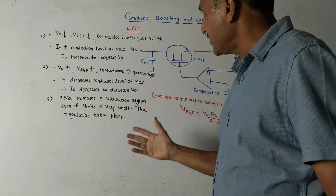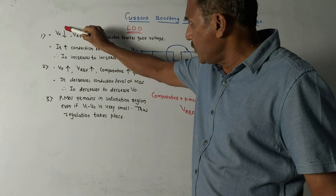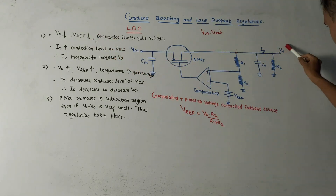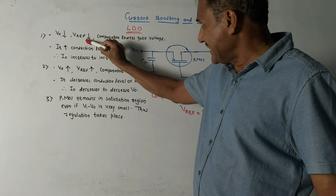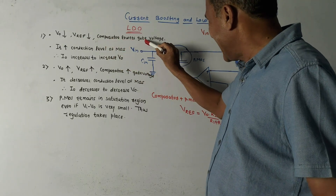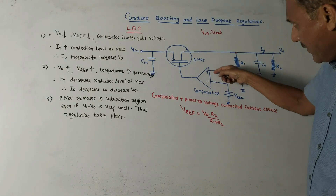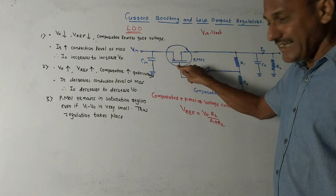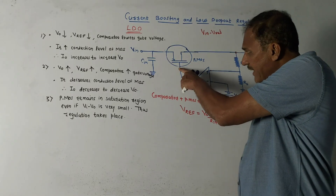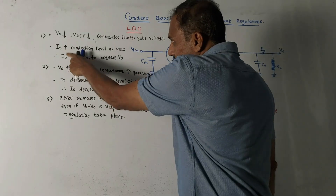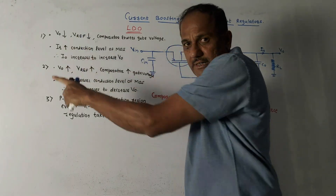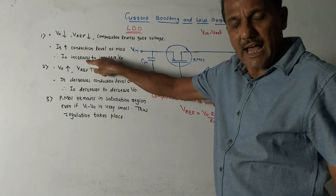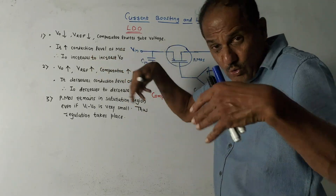Suppose the output voltage V0 decreases — in that case V_ref also decreases. The comparator lowers the gate voltage of the PMOS. When the gate voltage is reduced, it increases the conduction level of the MOSFET, therefore I0 increases and it will increase V0 back up. The downward arrow indicates decreasing value and upward arrow indicates increasing value.